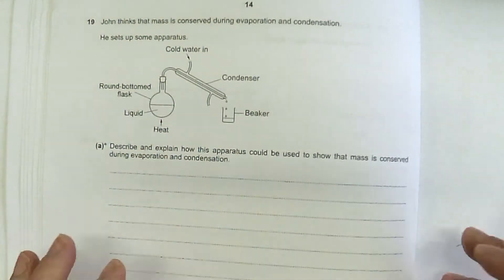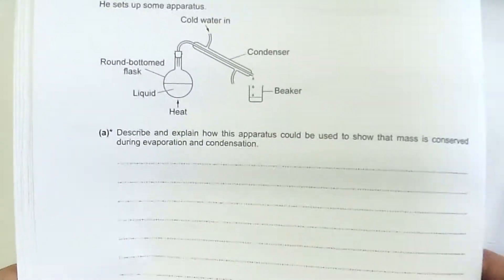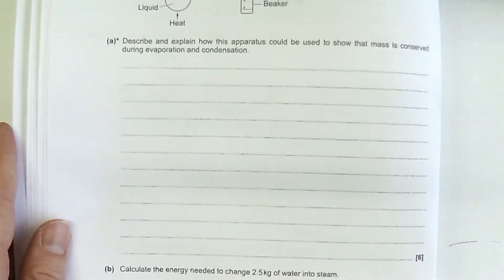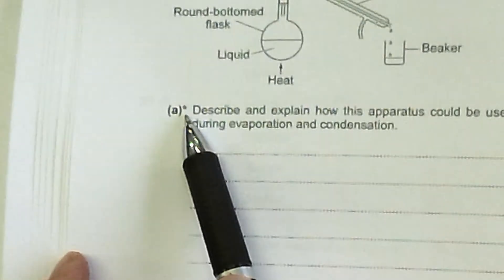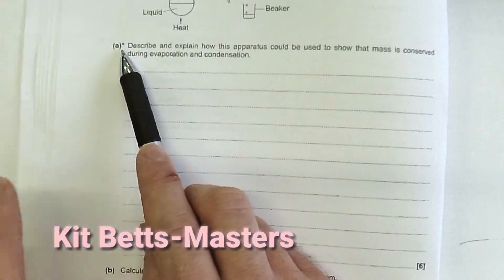This is commonly called a six marker because it's worth six marks, but there's a better way of describing it because not all of this type of question in the new GCSEs are going to be worth six marks. It's that asterisk that distinguishes it as a level of response or quality of written communication question.